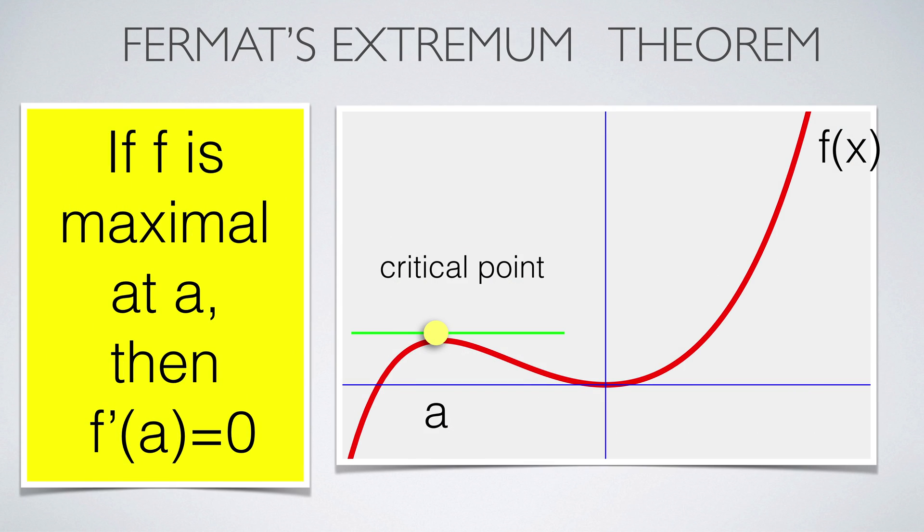An observation of Fermat tells that if a differentiable function has a local maximum at a point, then the derivative is 0 there. This follows directly from the definition. It gives a tool to find points which are candidates for maxima. Points where the derivative is 0 are called critical points.